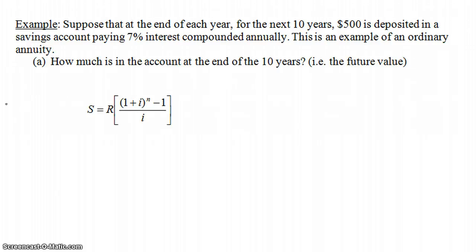Let's do an example. Part A is a review, but Part B will be new and important. Suppose at the end of each year for the next ten years, $500 is deposited in a savings account that pays 7% interest compounded annually. This is an ordinary annuity — you put in $500 every year at the end of each year, and it compounds annually once a year, matching the payment frequency.